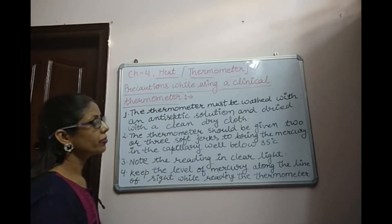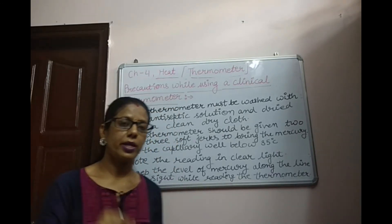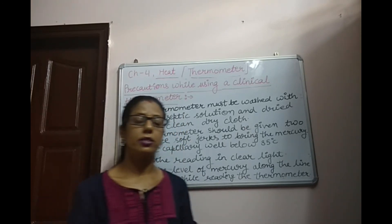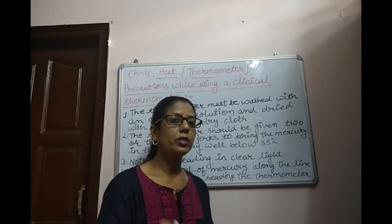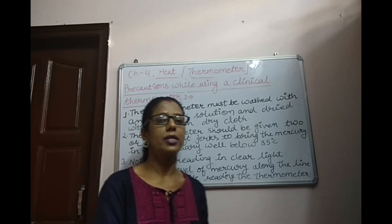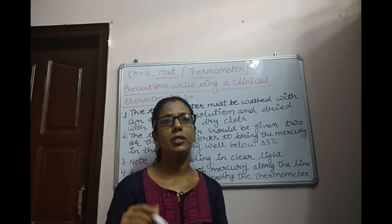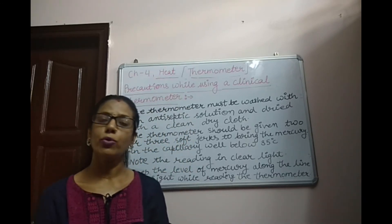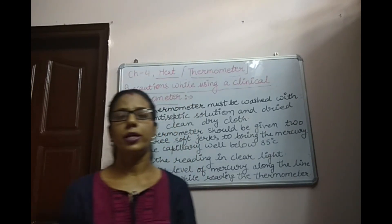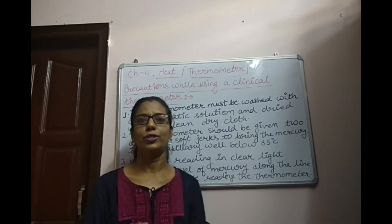These are some precautions while using a Clinical Thermometer. The range of the Clinical Thermometer is 35 degree Celsius to 42 degree Celsius, and 94 to 108 degree Fahrenheit, because the human body temperature does not go below 35 degree Celsius or rise above 42 degree Celsius. Thank you for watching.